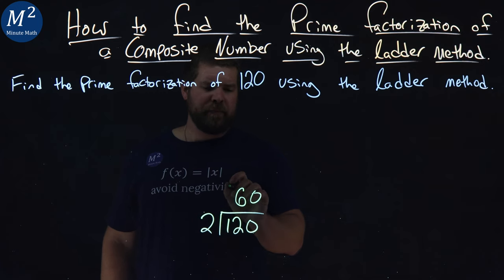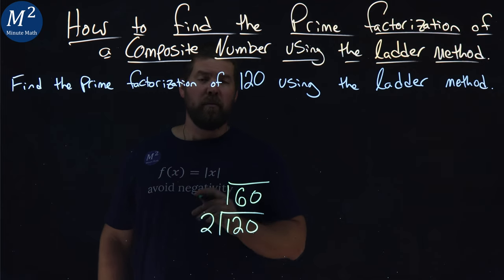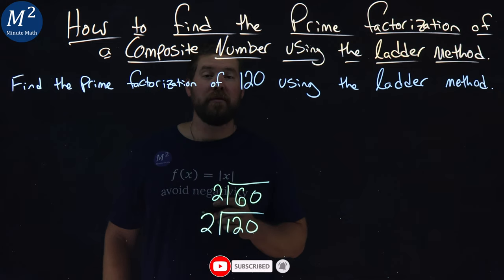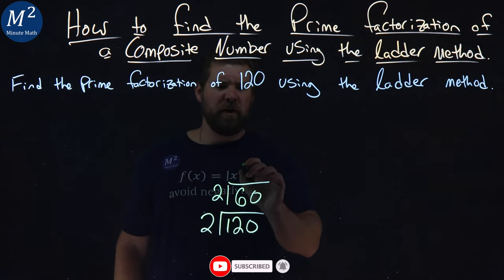Well, we know that's even, so we're going to do it again. Same thing. Lowest prime number, well, 60 is even, so we put a 2 in it. 2 goes into 60, well, it's 30.